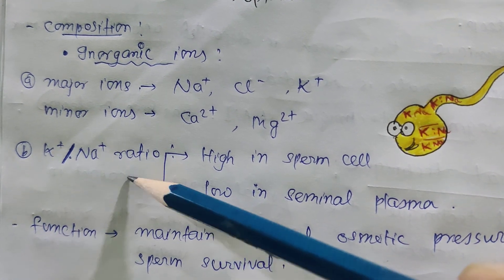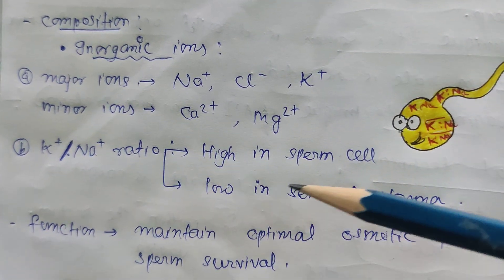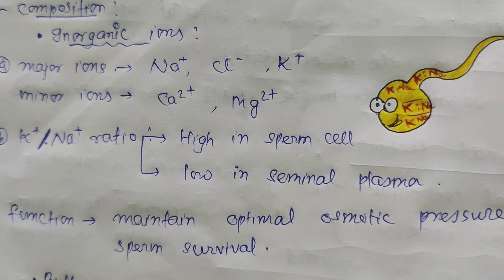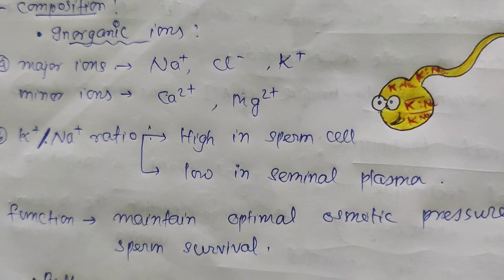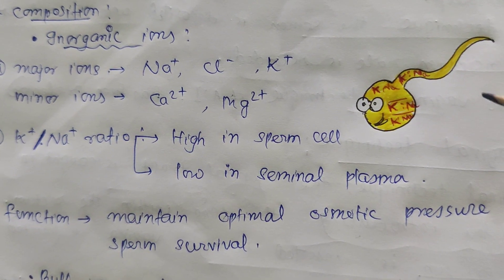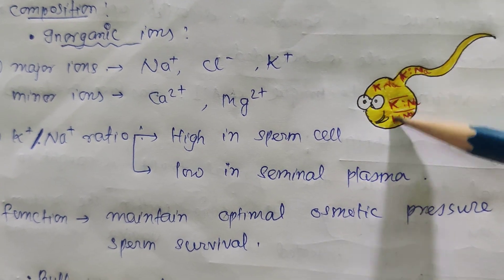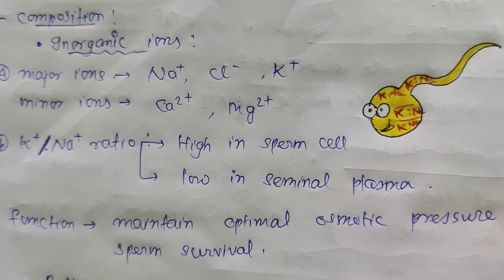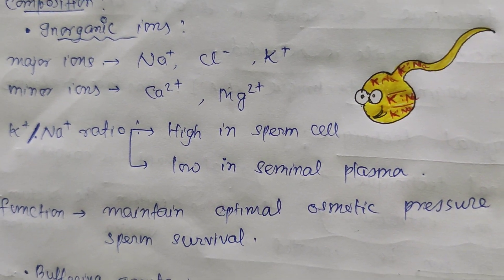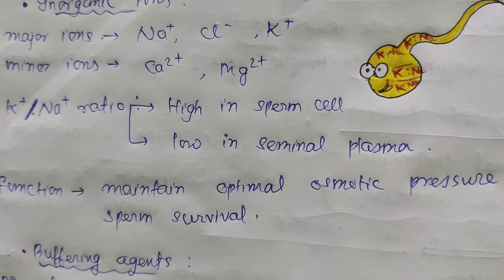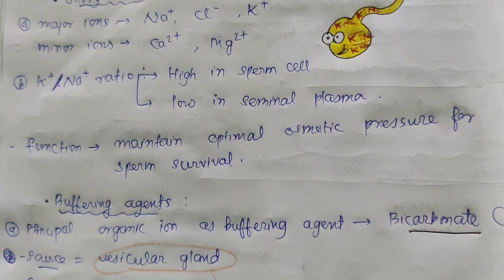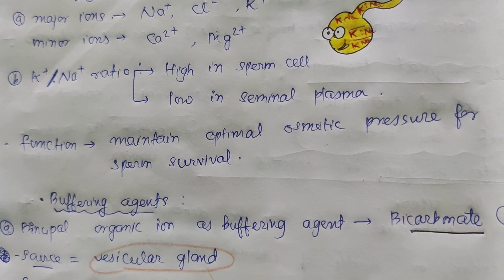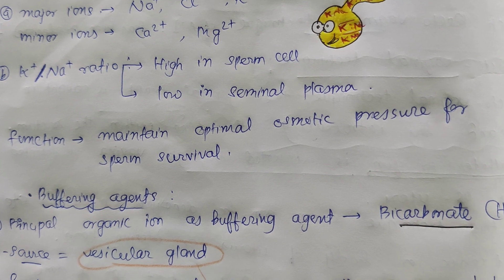The potassium-to-sodium ratio is high in the sperm cell — I have made a picture depicting this to make it easier to remember. Inside the sperm cell, the potassium-to-sodium ratio is high, but it is low in seminal plasma. The function of these inorganic ions is to maintain optimal osmotic pressure for sperm survival.